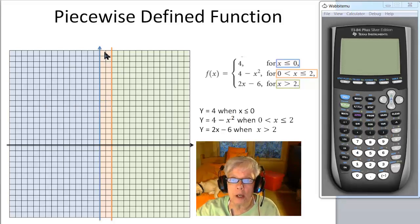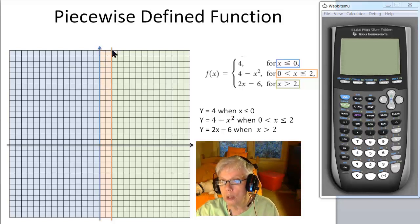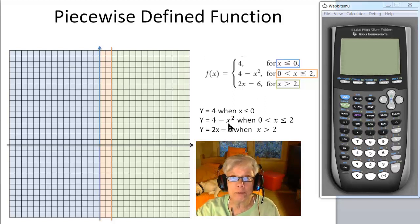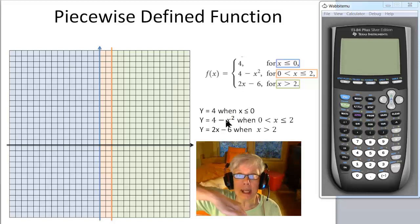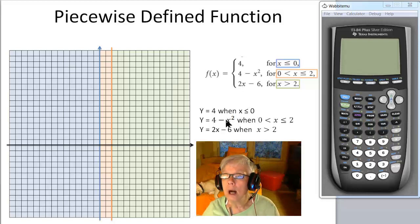And for the part of the domain that's between 0 and 2, you're going to graph y equals 4 minus x squared, which if you remember from intermediate algebra is an inverted parabola. That part is kind of orangey right in here, 0 to 2, x equals 0 to x equals 2.